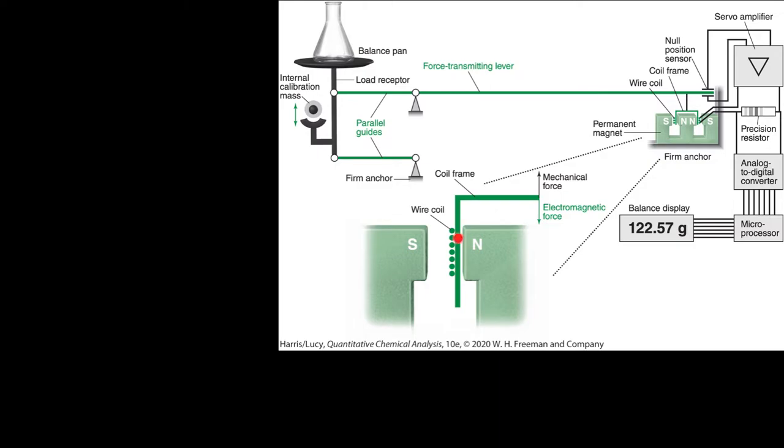What this does is it pulls out a wire from in between the poles of a magnet. So this mechanical force upwards is actually uncompensated right now, and so an electromagnetic force is used to oppose it to bring it back into balance again. And so how does it know to apply this kind of force? Well, there's a null sensor position right here.